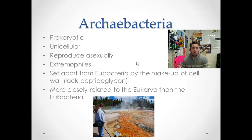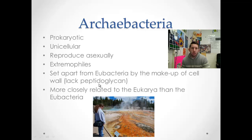The archaebacteria are another prokaryotic kingdom, members of the domain archaea. They are also prokaryotic, unicellular, and reproduce asexually. These, however, are the extremophiles — they prefer extreme conditions. The methanophiles like to live where there are high levels of methane, like in swamps or the guts of ruminants, and are very useful in digestion — that's why cows can break down cellulose. Thermophiles like it hot. Halophiles prefer high salt content, like in the Great Salt Lake. They differ from eubacteria because they lack a particular peptidoglycan in their cell wall, which also makes them more closely related to the domain eukarya than to eubacteria.